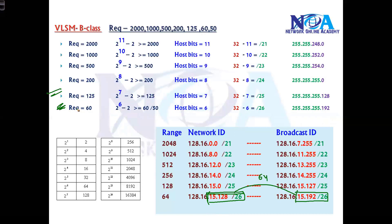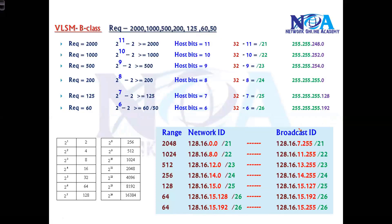For the 50-host requirement, the possible size is again 64 with slash 26. The next block starts from 15.192 and goes to 15.255 — another group of 64 addresses.